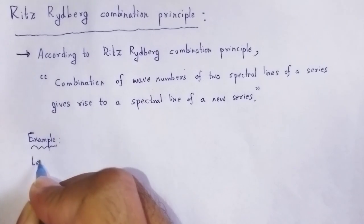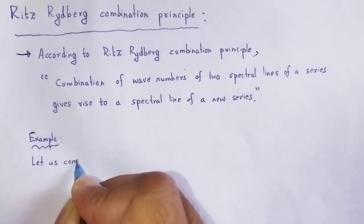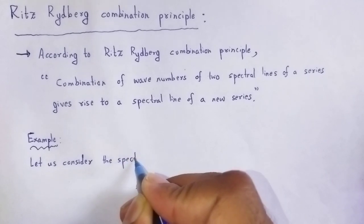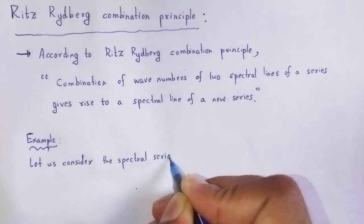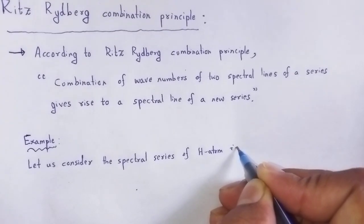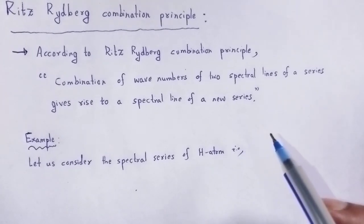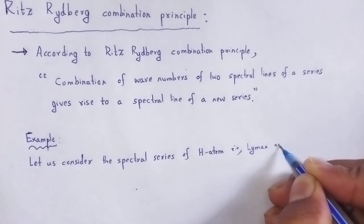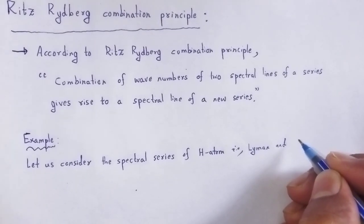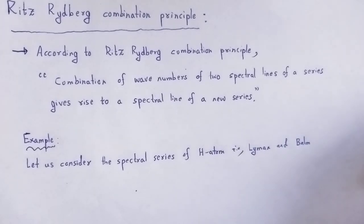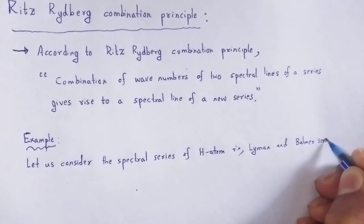Let us consider the spectral series of the hydrogen atom. We will refer to two spectral series: one is the Lyman series and the other is the Balmer series.